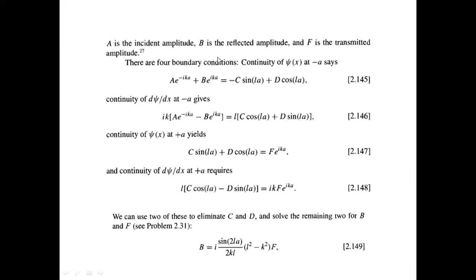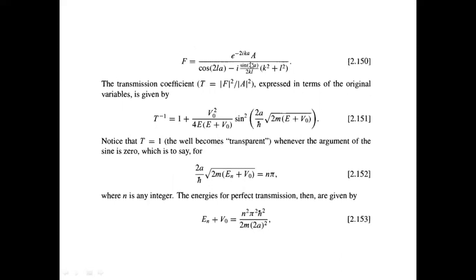Now we have to solve for the constants using the boundary conditions. The boundary conditions state that psi of x is continuous at the boundaries and the derivative of psi is also continuous at the boundaries. From these four equations we can eliminate C and D and solve for the remaining two constants, obtaining B and F.